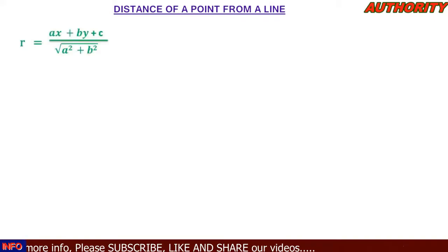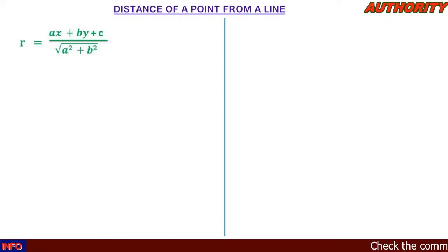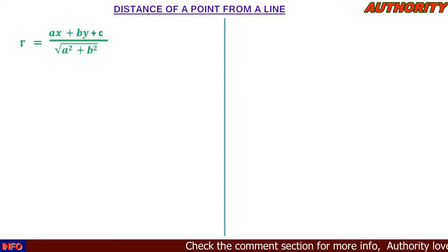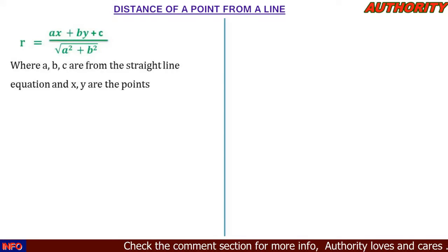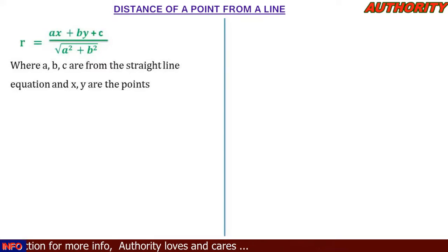We're going to use this formula. The distance r is given by: ax plus by plus c, all over square root of a squared plus b squared. In the numerator we have a, b, c, and x, y — so simply ax plus by plus c, all over square root of a squared plus b squared, where a, b, c are from the straight line equation and x, y are from the point.